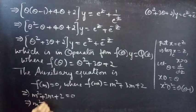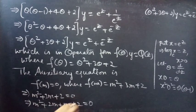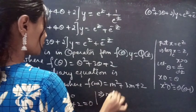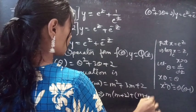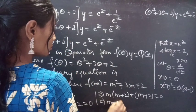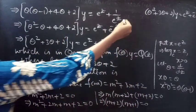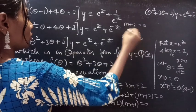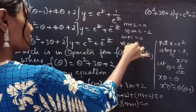Splitting 3m as 2m + m: m² + 2m + m + 2 = 0. Taking m common from the first two terms gives m(m + 2), and the next two terms give (m + 2). Taking (m + 2) common: (m + 2)(m + 1) = 0. Equating each factor to zero gives m = −2 from (m + 2) = 0, and m = −1 from (m + 1) = 0.